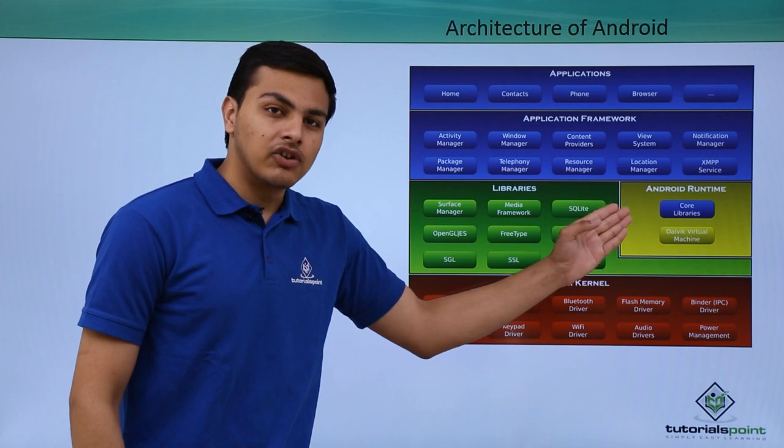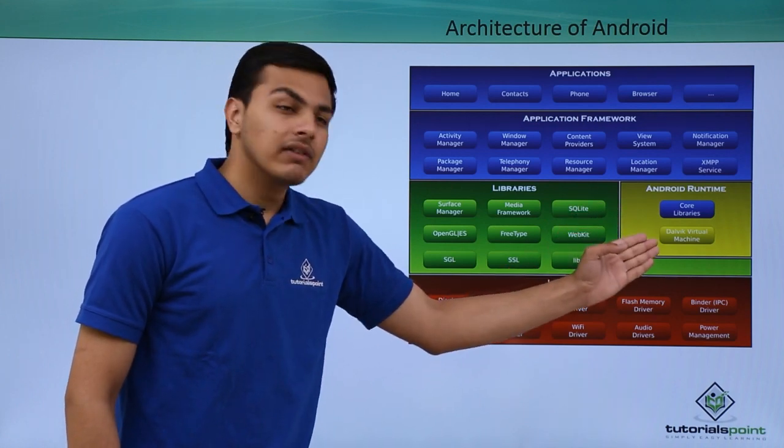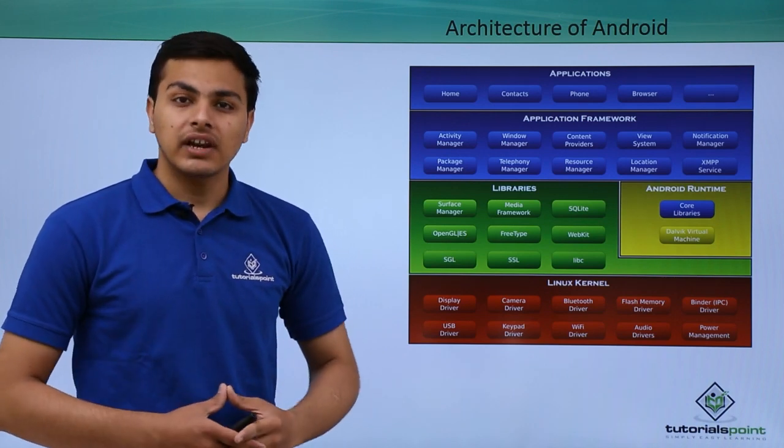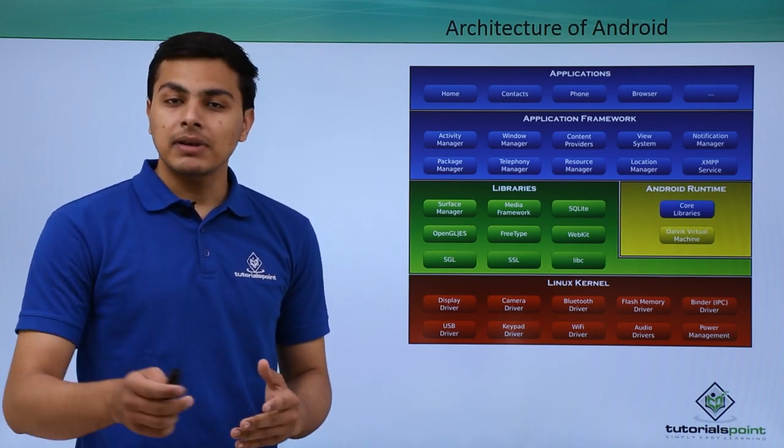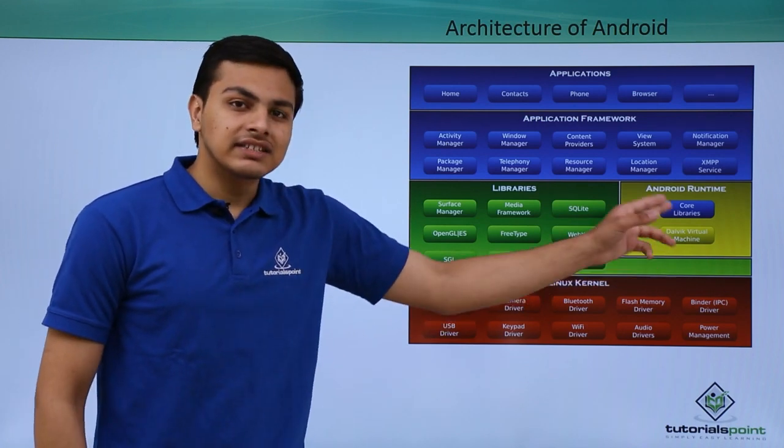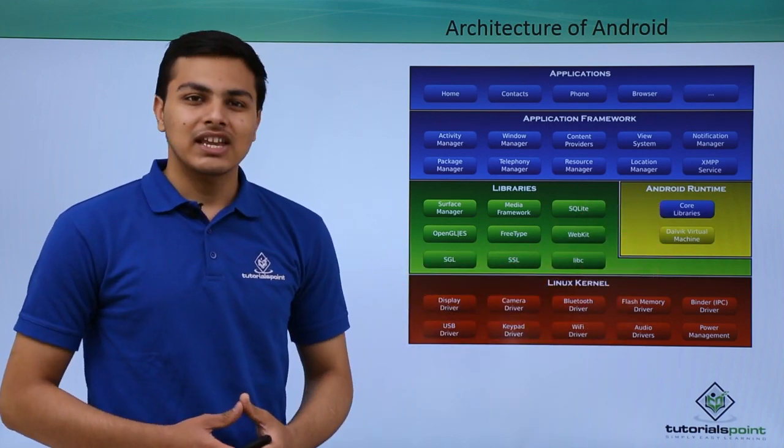You can see that the Android runtime layer consists of two components: core libraries and Dalvik virtual machine. The Dalvik virtual machine is responsible for running our Dalvik executable applications—that is, Android applications. This layer contains all the necessary features needed to run our Android applications.